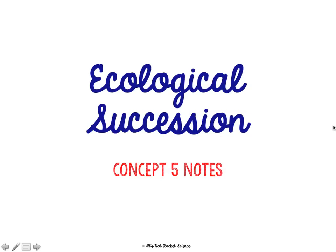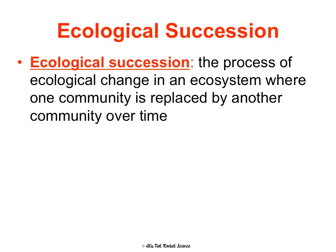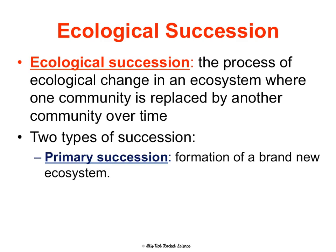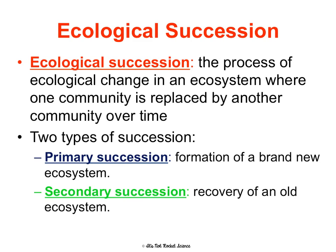We're going to be talking through Concept 5 notes on ecological succession, and this is going to be the same notes for CP and honors students. Ecological succession is the process of ecological change in an ecosystem where one community is going to replace another over time. We see two types: first is primary succession, which is the formation of a brand new ecosystem from scratch, and then there's also secondary succession, which tends to be the recovery of an old or previously existing ecosystem.